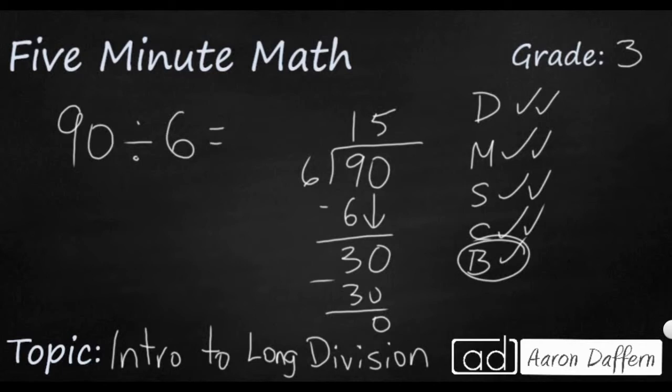To double check, let's multiply 15 times 6, the inverse operation. 5 times 6 is 30. We're going to carry that 3. 6 times 1 is 6. Add the 3 back in. That's 9. So that's how you start using long division.